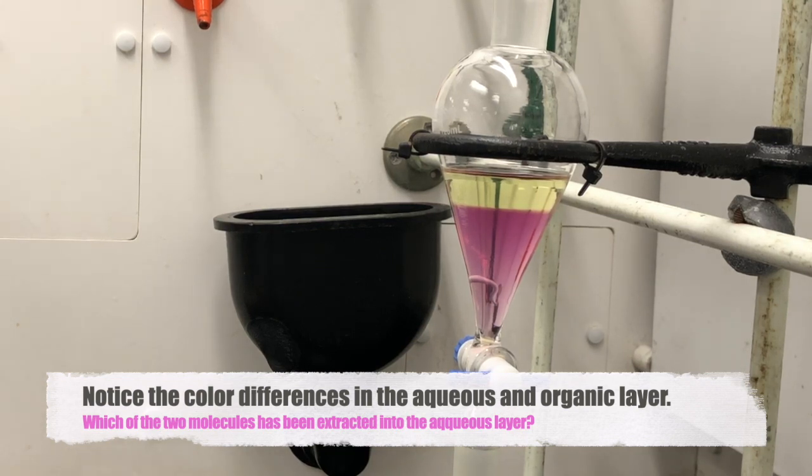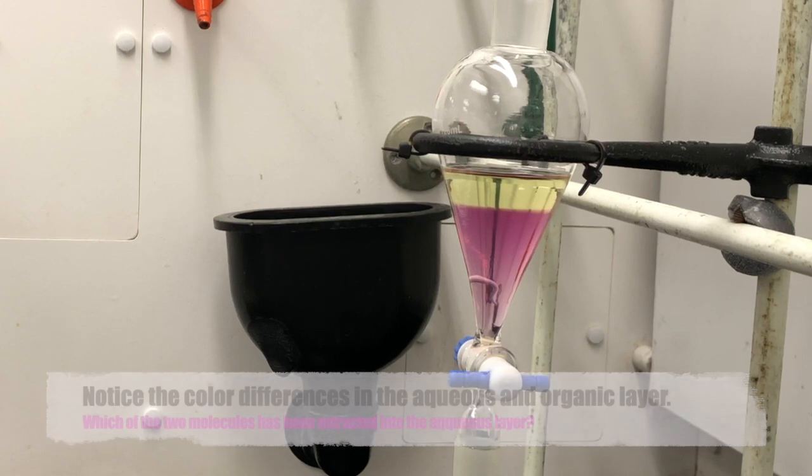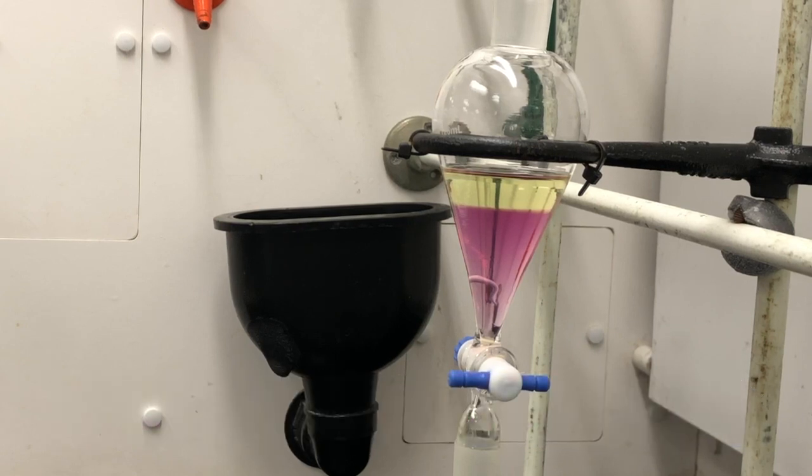And again, if you're not sure which one is the aqueous or organic layer, you can think about it in terms of density by looking up the density of each ahead of time. Or if you're not certain, that's why we save what we collect in case we dispense the wrong layer.